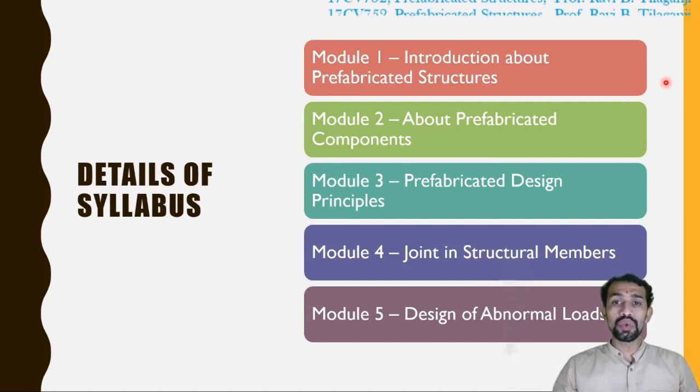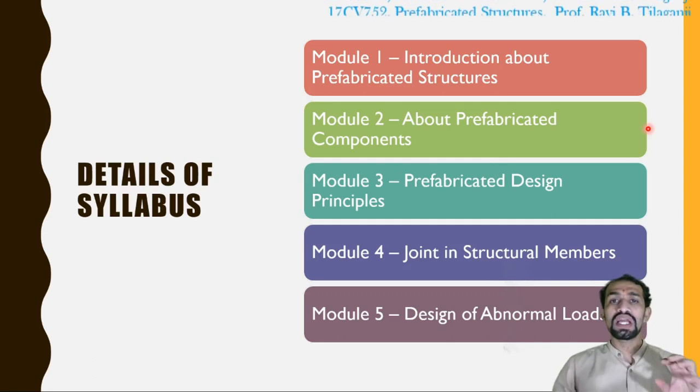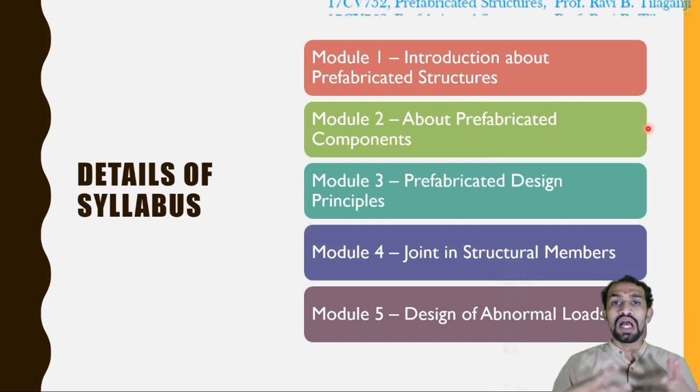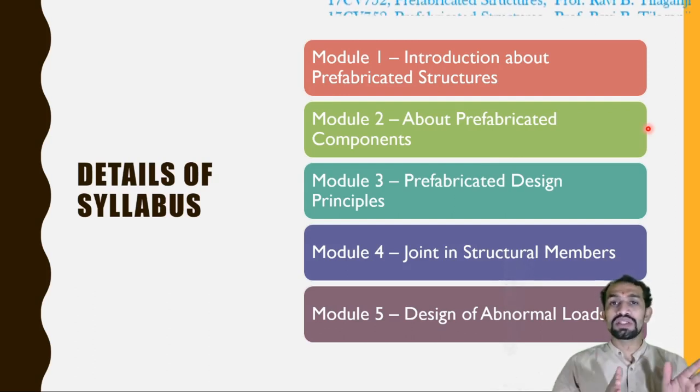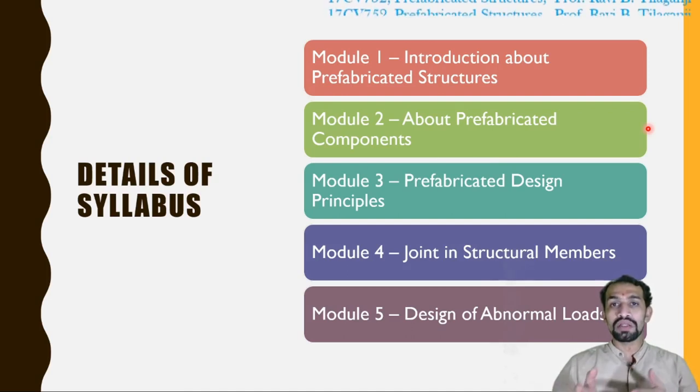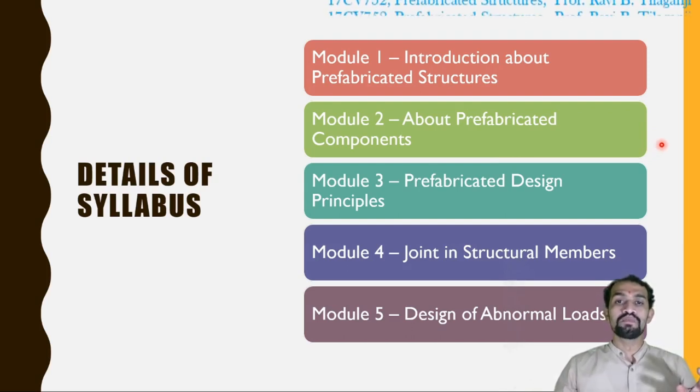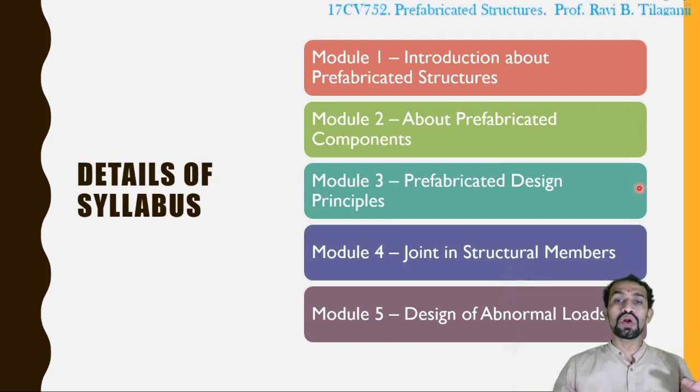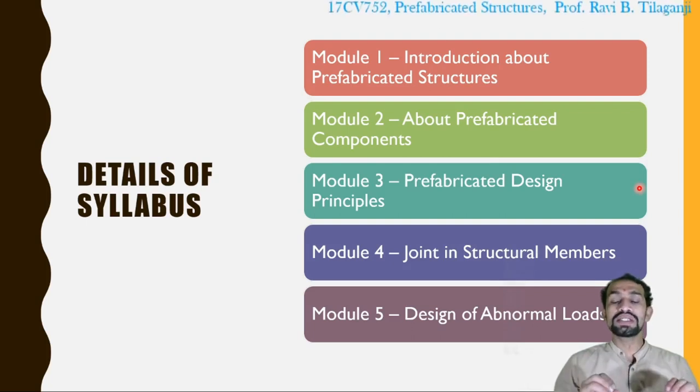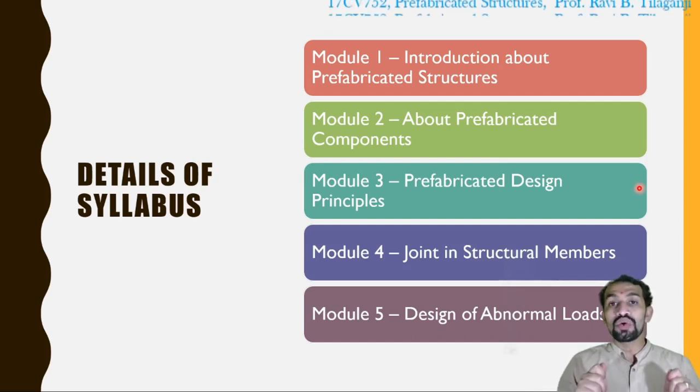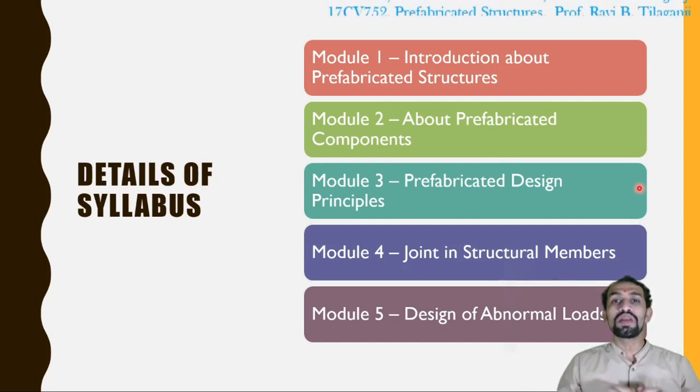Module 2 about prefabricated components. There are similar components. For RCC also we bifurcate the components such as foundation, column, lintel, beam, slab, all like this. So some components will be there in prefabricated. Those will be studied in module number 2. Module 3 relates to what are the design principles, how the design is going to be carried out, what are the main factors we are going to consider.